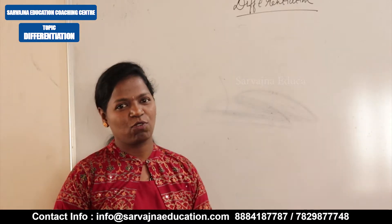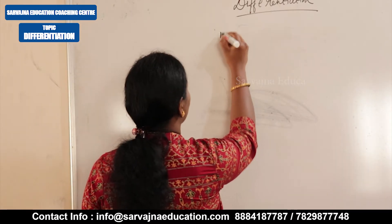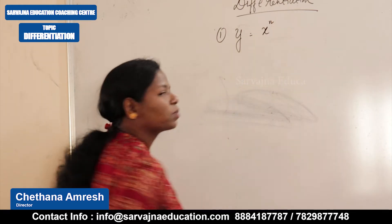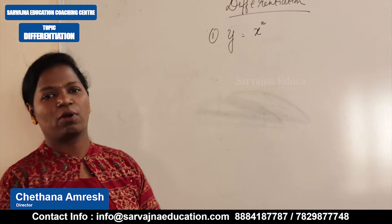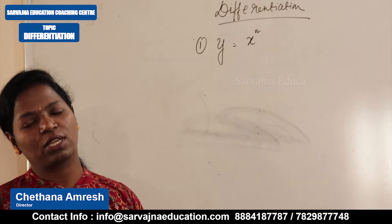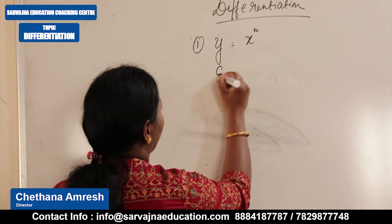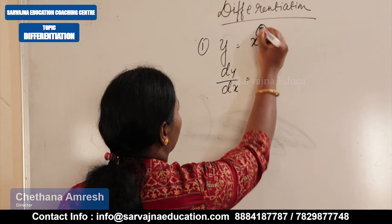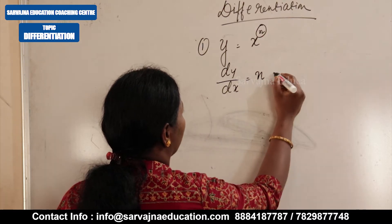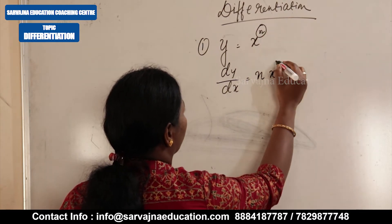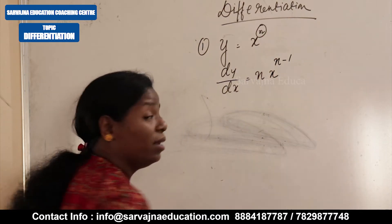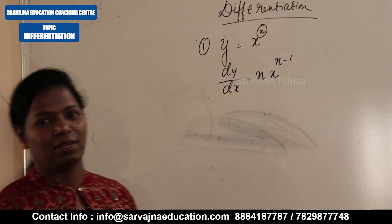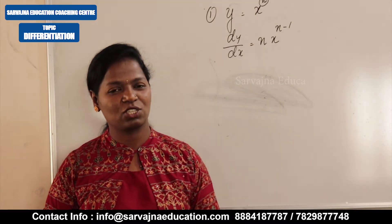We'll start with the basic formula. The first basic formula of differentiation is y = x to the power of n. The formula is: dy/dx = n x to the power of n minus 1. First you write n, then x, and the power is decreased by 1. So n x to the power of n minus 1 — this is the very basic formula of differentiation.